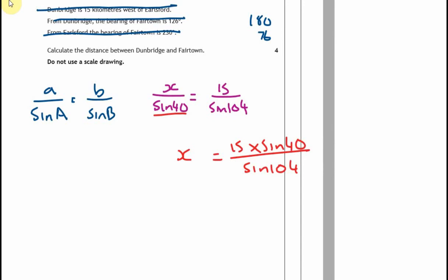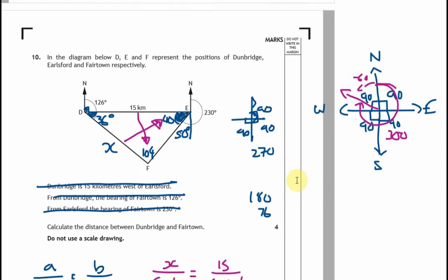Calculators out. We're doing 15 times sine of 40 divided by sine of 104. That's going to give me 9.936, I'll round it to three decimal places, 9.937 and our units were kilometers. So that's it.